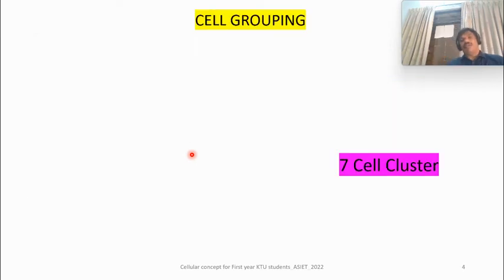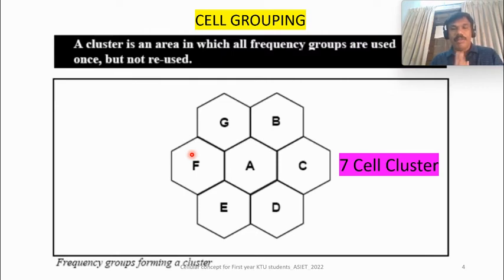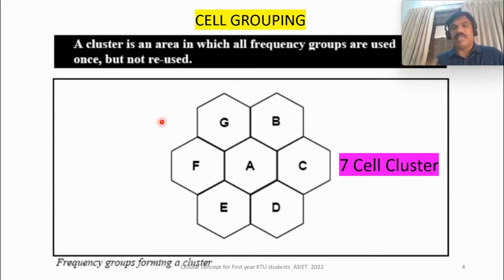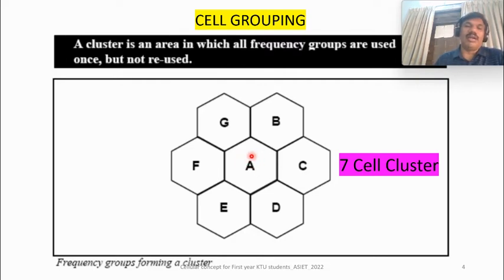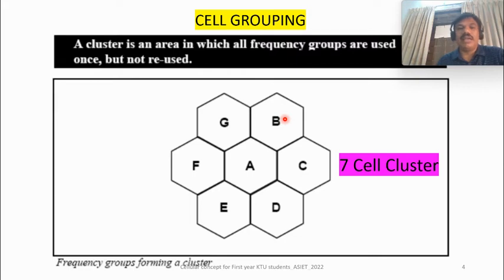The concept of cell grouping is very important. For example, BSNL is a cellular provider in Kerala and is provided with 70 channels by TRAI — Telecom Regulatory Authority of India. So channel A situated in Angamali uses channels 1 to 10, the next cell B covering Kalady and surrounding places uses channels 11 to 20, and so on. The 70 channels are equally distributed among 7 cells — 70 divided by 7 equals 10 channels per cell — forming a cluster.